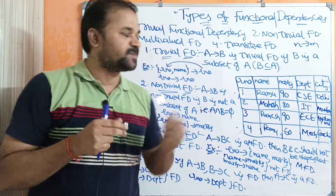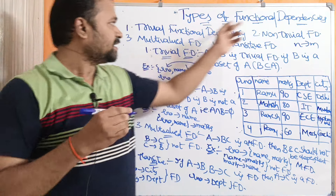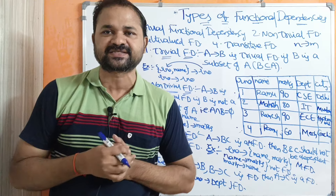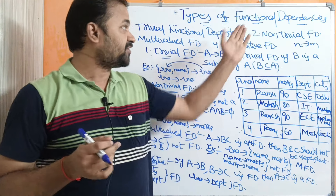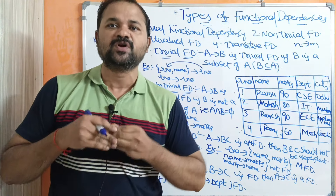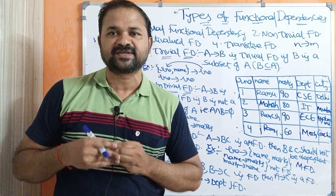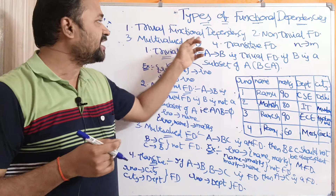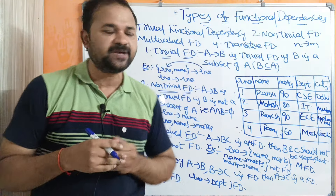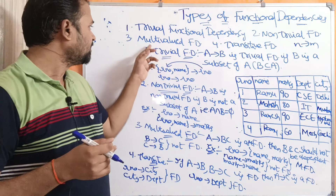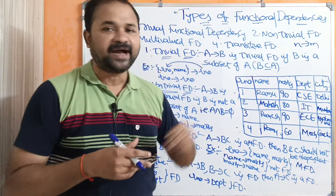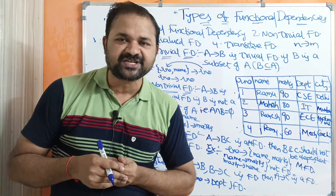Let us discuss about types of functional dependencies in DBMS. Functional dependencies are mainly classified into four types: trivial functional dependency, non-trivial functional dependency, multi-valued functional dependency, and transitive functional dependency.